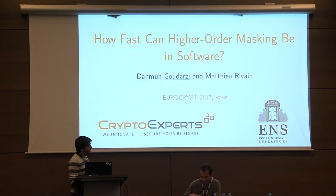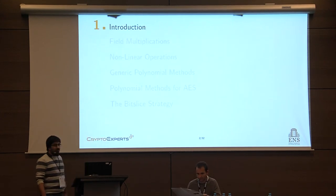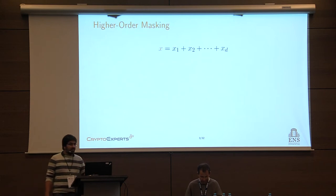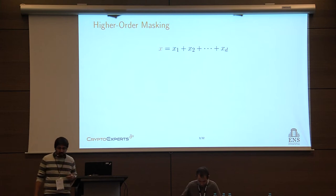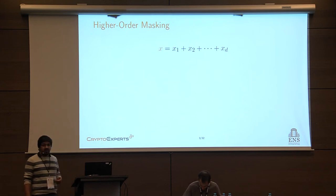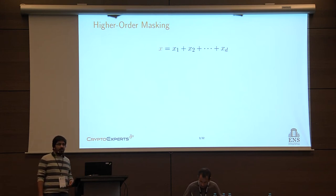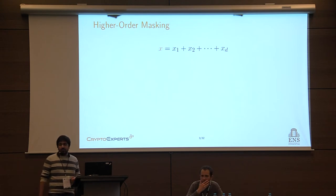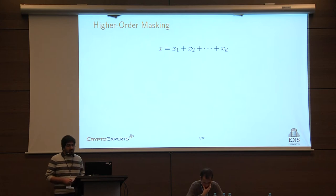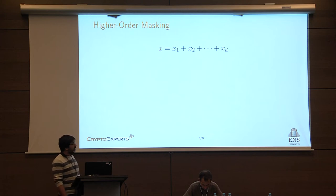Thank you for the introduction. So first, a little bit of introduction: what is high-order masking? As explained in the previous talk, high-order masking is a widely used countermeasure to protect cryptographic implementations against side-channel attackers. It simply consists in splitting every sensitive variable into random values such that the sum of all these values equals the sensitive variable. It is a sound countermeasure since it has been formally proved that the more the masking order grows, the more exponentially difficult it is for an attacker to recover any information about the sensitive variable.